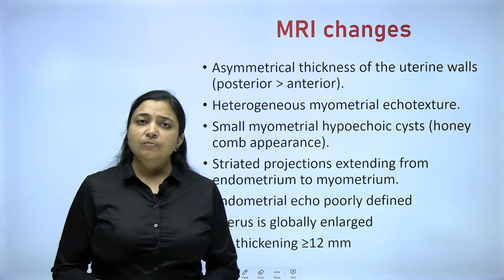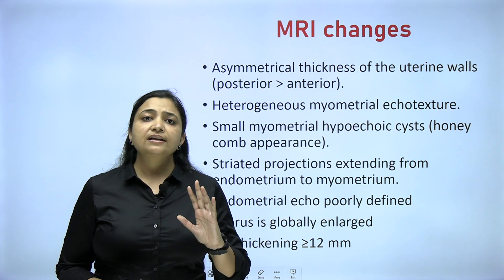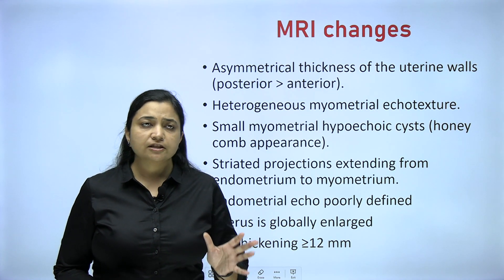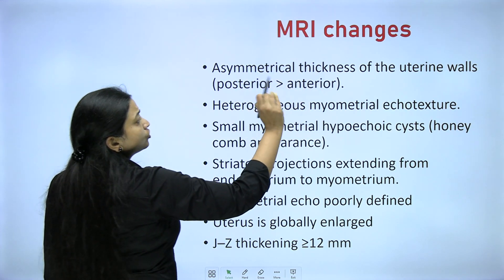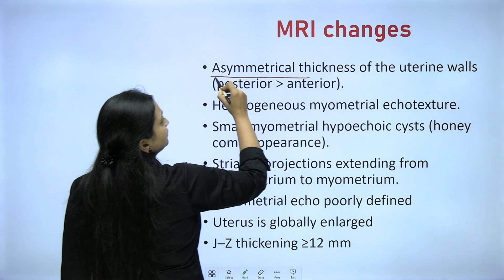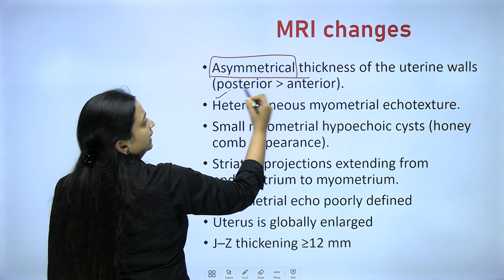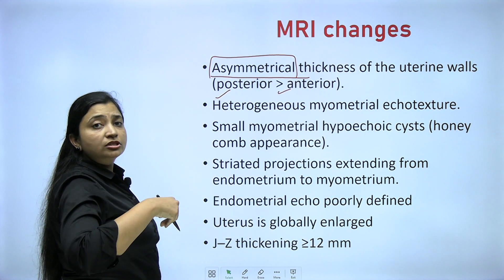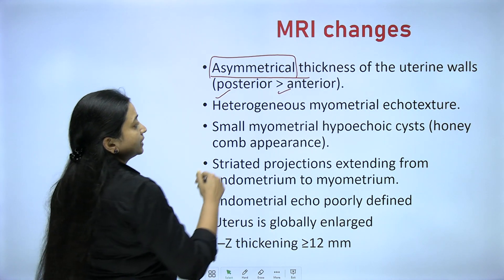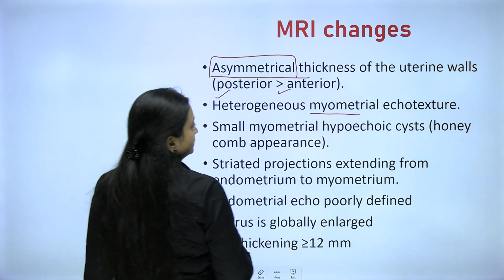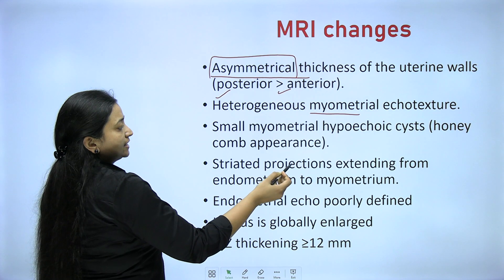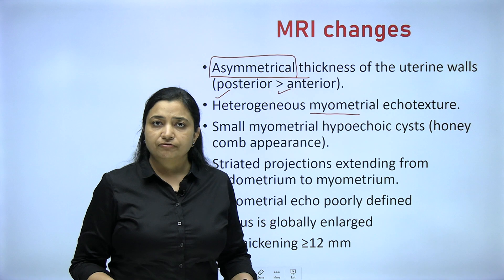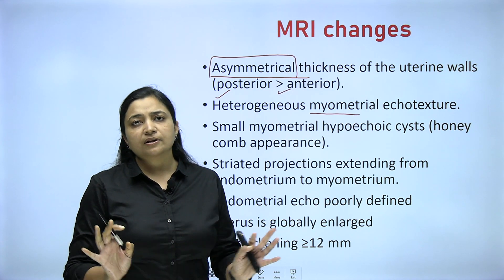If there is still some problem, we can always go for MRI. MRI is diagnostic but used less frequently because it is expensive. MRI will show the same changes: asymmetrical thickness of the uterine walls — posterior more, anterior less — due to infiltration going into the posterior wall. Heterogeneous myometrial echotexture, small myometrial hypoechoic cysts or honeycomb appearance. Remember the pathogenesis and you will remember the investigations.